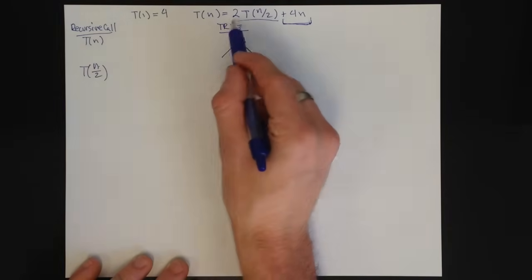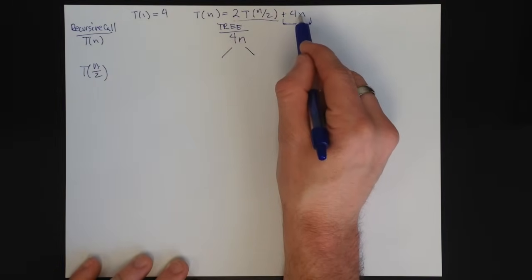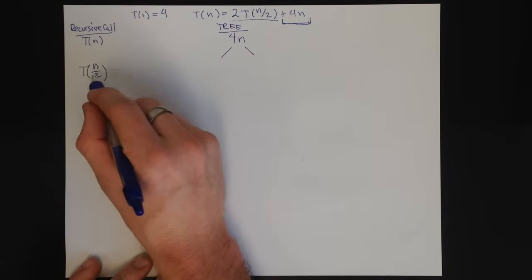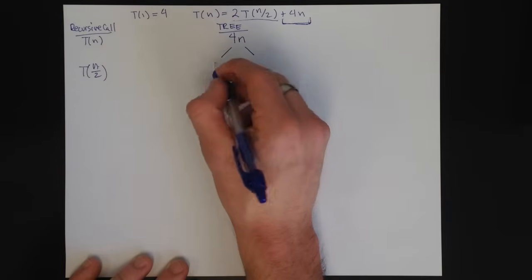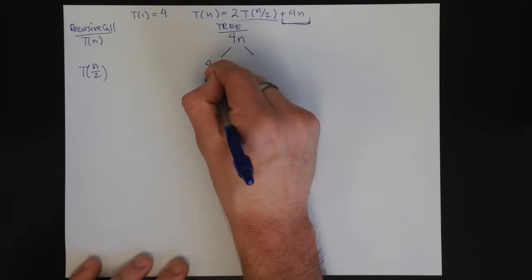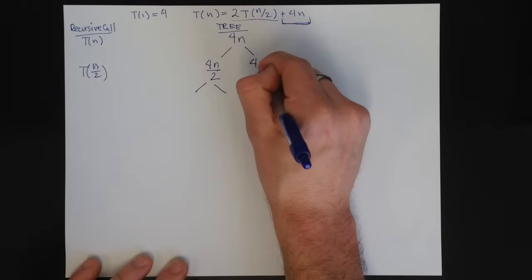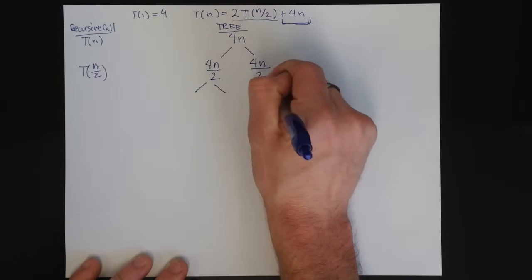So I plug n/2 into this equation and I get 4 times n/2, which means that for a recursive call that starts with n/2, the amount of operations I do is 4n/2 plus two recursive calls. 4n/2 and two recursive calls.